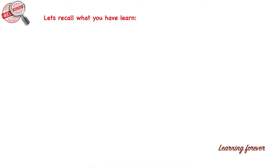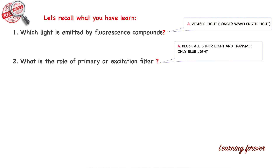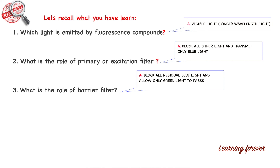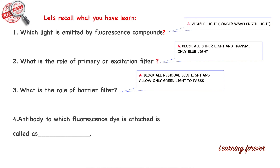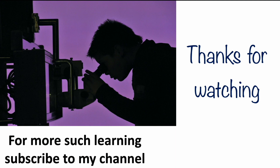Let's recall what we have learned through small questions and answers. Question one: which light is emitted by a fluorescence compound? Answer: visible light — fluorescence compounds absorb UV light (shorter wavelength) and emit visible light (longer wavelength). Question two: what is the role of the primary or excitation filter? Answer: it blocks all other light and transmits only blue light. Question three: what is the role of the barrier filter? Answer: it blocks all residual blue light from the sample and allows only green light to pass. Question four: an antibody to which fluorescence dye is attached is called a labeled antibody. Thanks for watching — if you liked this session, press like, share with your friends, and subscribe to my channel for more learning.